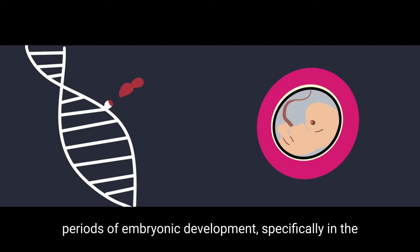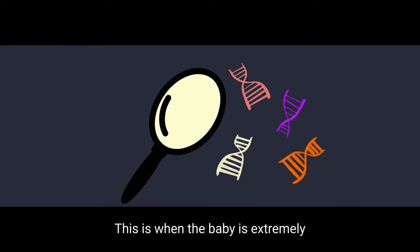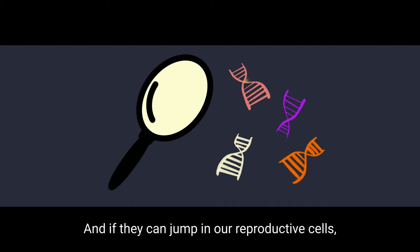These elements like to jump during early periods of embryonic development, specifically in the still-developing sperm and egg cells. This is when the baby is extremely vulnerable to the attack of jumping genes, and if they can jump in our reproductive cells, they can get passed down to the next generation.